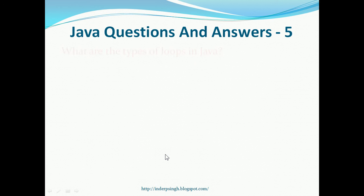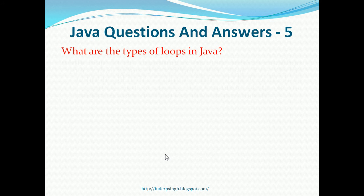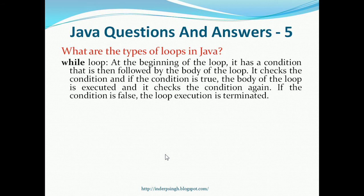Question 5. What are the types of loops in Java? One loop is a while loop. At the beginning of the loop, it has a condition that is then followed by the body of the loop. The while loop checks the condition and if the condition is true, the body of the loop is executed and it checks the condition again. Once the condition becomes false, the loop execution is terminated.